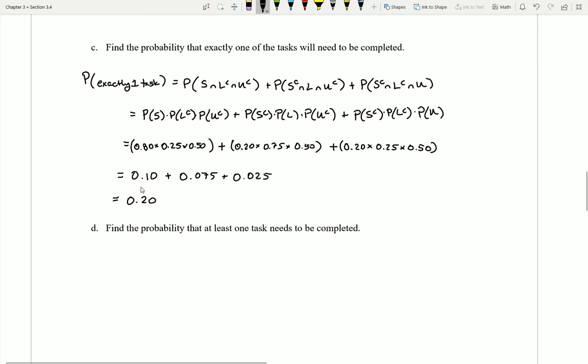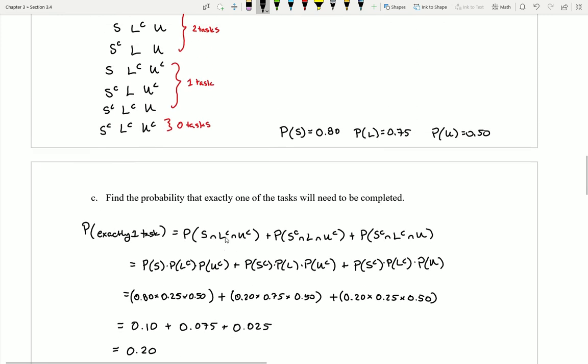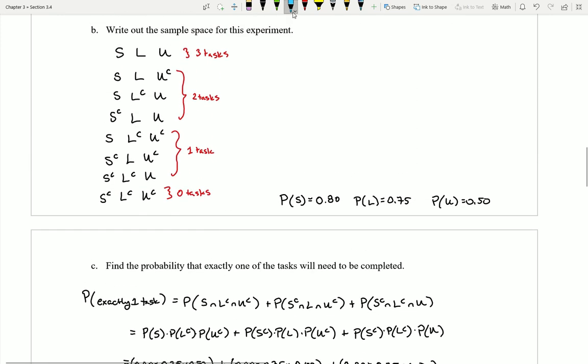Let's take a look at Part D. Find the probability that, oh, here we go again, at least one task needs to be completed. I'm going to go back and look at that sample space to help me out. I want at least one task. So which of these things am I interested in finding if I want at least one? Well, yeah, that would be all of these over here are one or more. One is the least. It's only this last case that I'm not interested in.